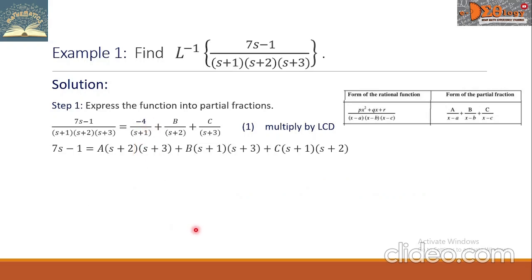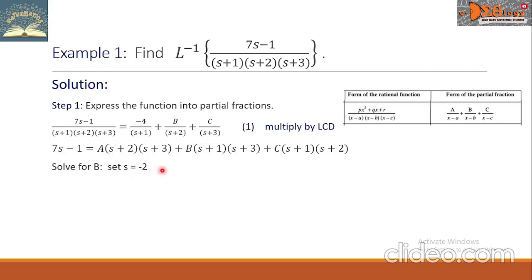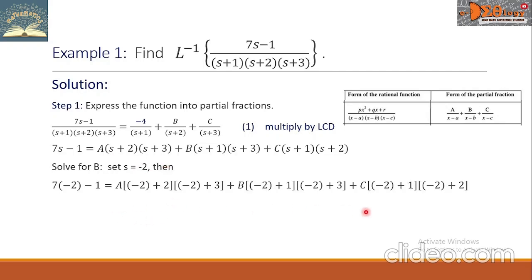Let's go now to solving for b. Observe the groups for a and c — both have factor (s + 2). So we are going to set s equals negative 2. We will change all s by negative 2, and by doing this we are going to cancel out the variables a and c.